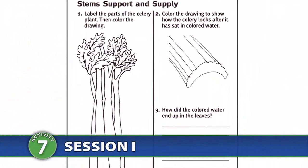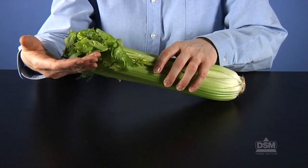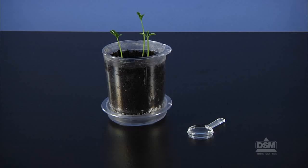To prepare for Session 1, make a copy of Activity Sheet 7 for each student. Students will also need their copy of Activity Sheet 1. Purchase a bunch of celery with the leaves still attached. Each student will need a magnifier and their planter cup of seedlings from Activity 3. If a student's seeds did not sprout, give him or her some plants from the garden box.